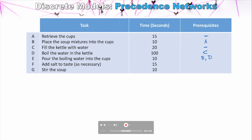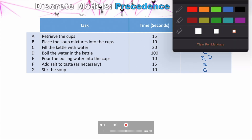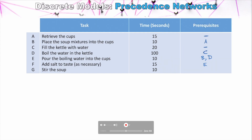For adding salt to taste, we'd want to have poured the boiling water into the cups first, so that has a prerequisite of E. Then stirring the soup to finish — you want everything in there before you start stirring, so the prerequisite is F. Now that we've established what the prerequisites are, we can show a visual network diagram that illustrates this, and use that diagram to work out the most efficient path to complete the project.